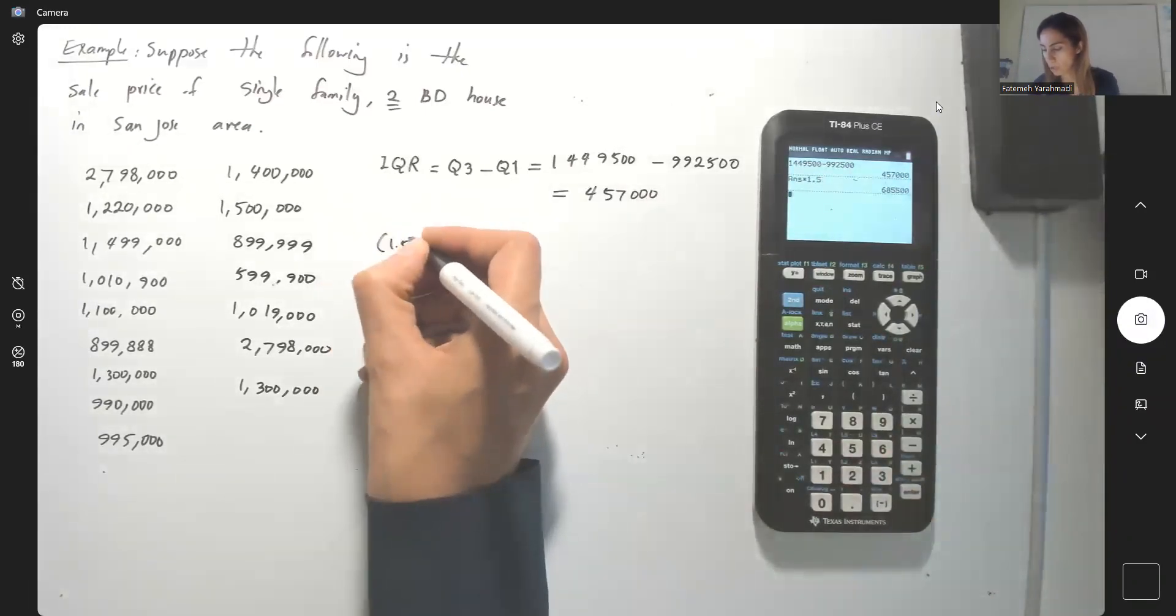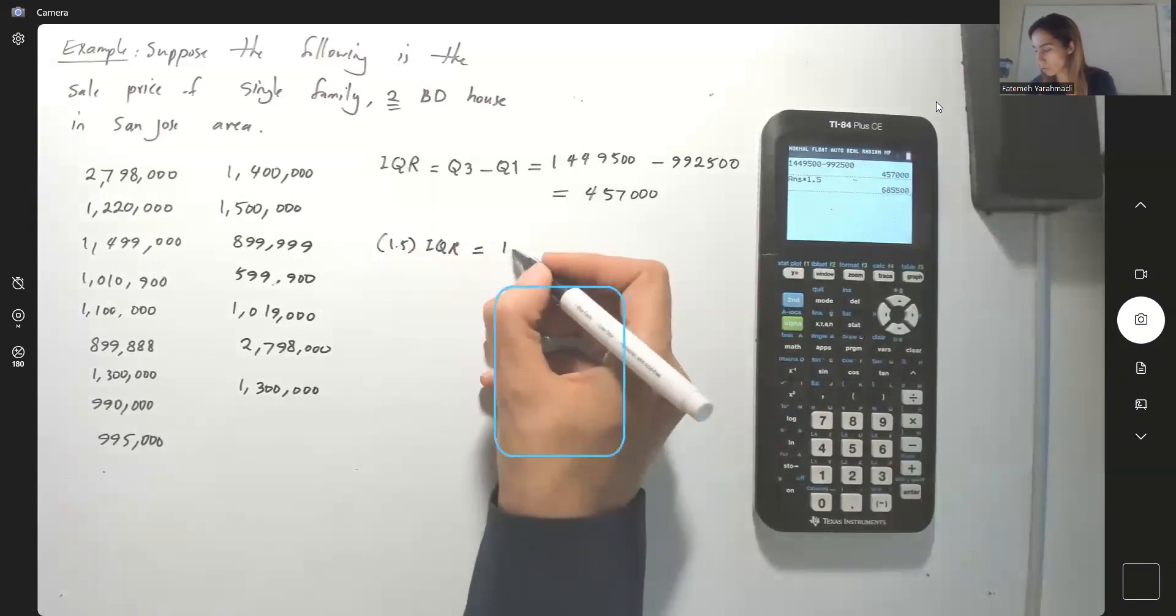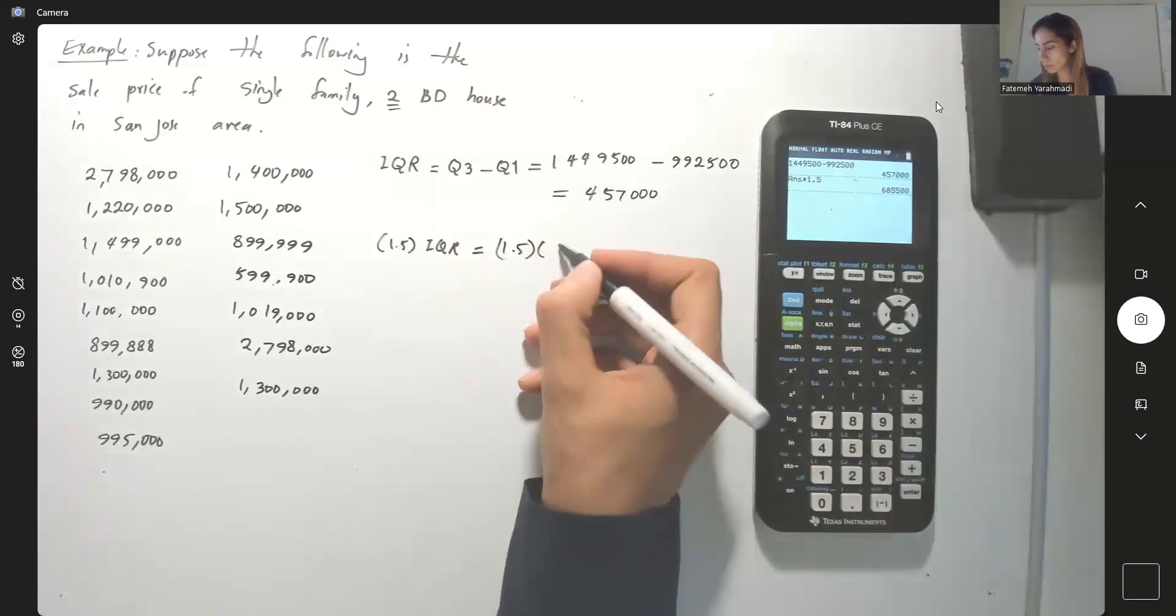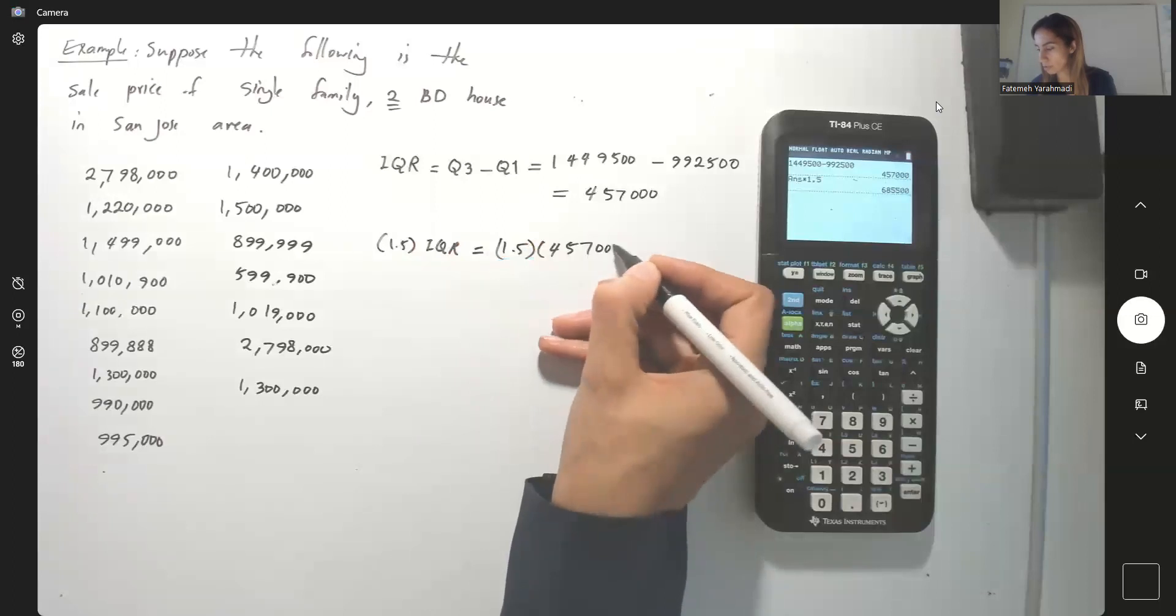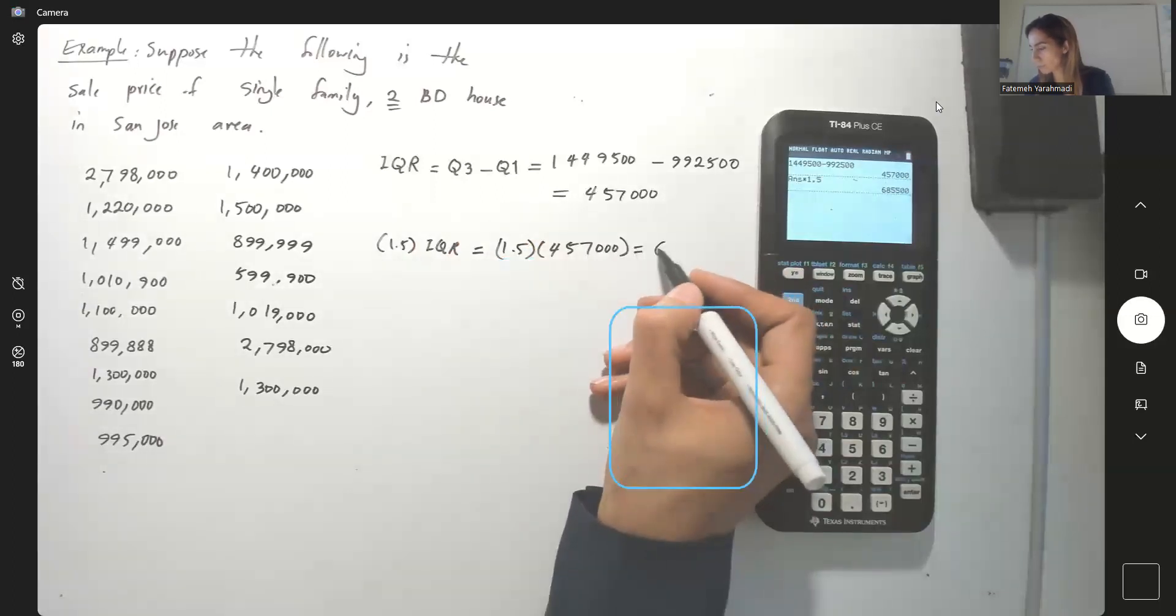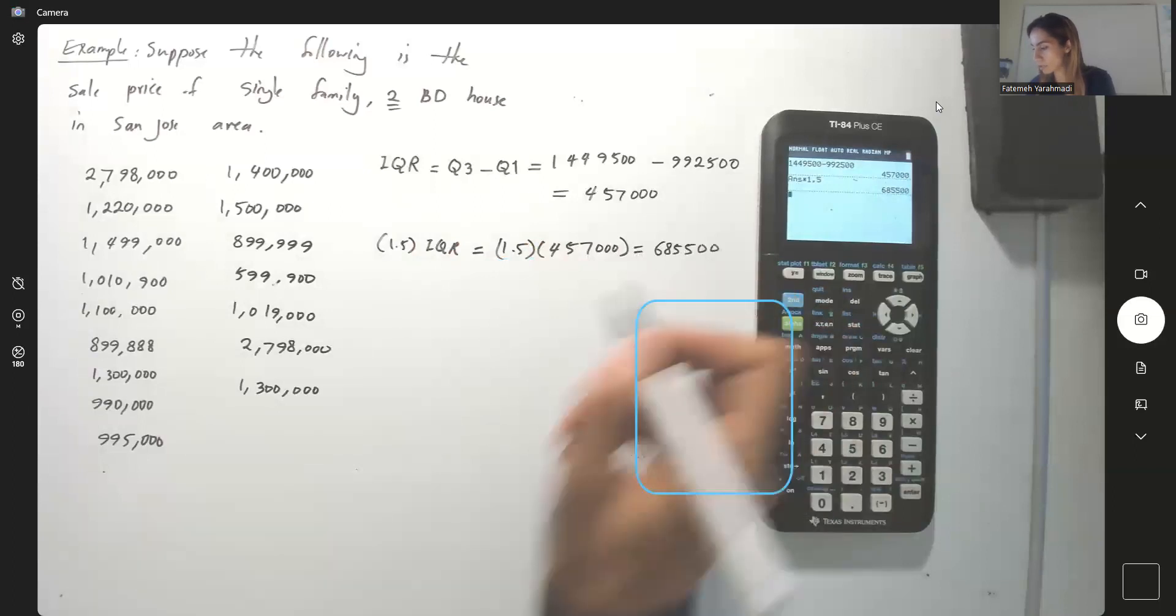So 1.5 times interquartile range, which is 1.5 times this number that you calculated. Trying to write down everything and then the calculator just up there.